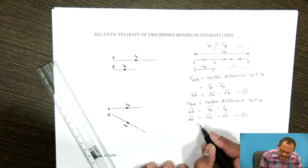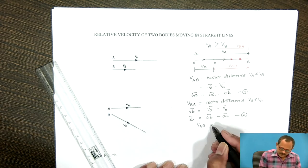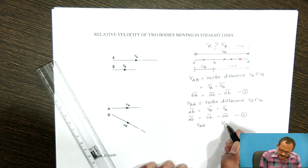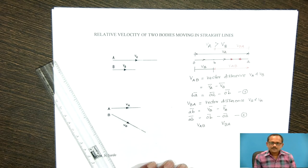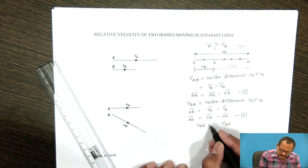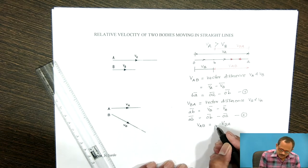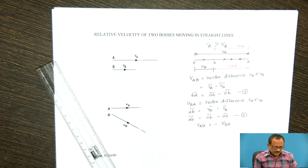Here, the relative velocity of A with respect to B and B with respect to A is determined. The relative velocities are opposite in direction.